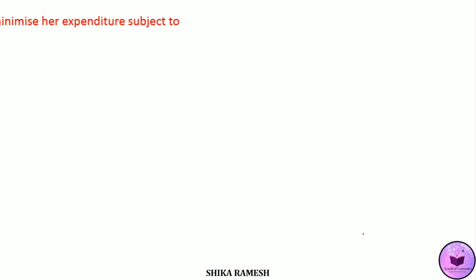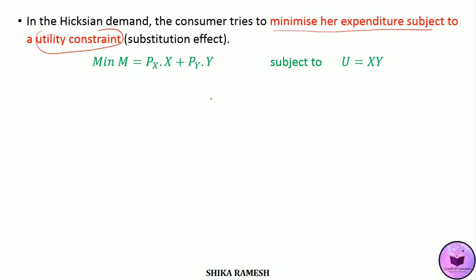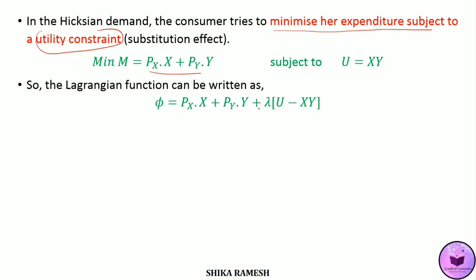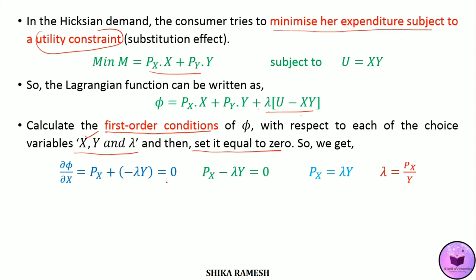Similarly we can derive the Hicksian demand using the Lagrangian function. In the Hicksian demand, the consumer minimizes expenditure subject to a utility constraint: minimizing m equals Px times x plus Py times y, subject to u equals xy. The utility constraint is equated to zero, multiplied by lambda, and added to the objective function. The Lagrangian function phi equals Px times x plus Py times y plus lambda times (u minus xy). Differentiating with respect to x: del phi by del x equals Px minus lambda times y equals zero, giving Px equals lambda y, so lambda equals Px divided by y.